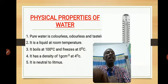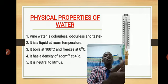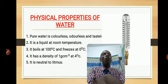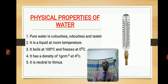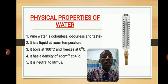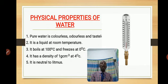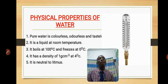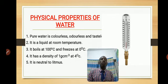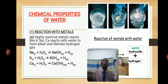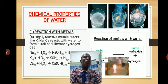Let's talk about the physical properties of water. Number one: water is colorless, odorless, and tasteless. Pure water is a liquid at room temperature. Water boils at 100°C (373 K) and freezes at 0°C (273 K). The density of water is 1 g/cm³ — that is, 1 gram of water equals 1 cm³ at 4°C. Water is neutral to litmus; it is a neutral oxide.